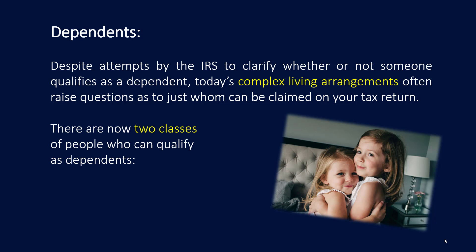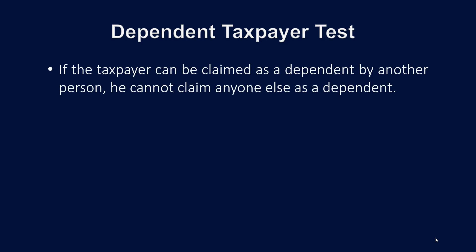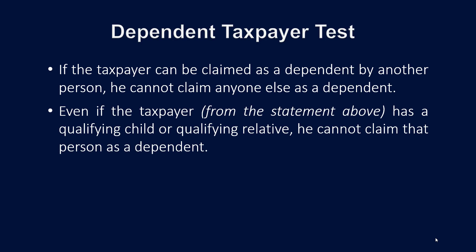There are now two classes of people who can qualify as dependents: qualifying children and qualifying relatives. Now let's go through some of the situations for dependent taxpayer tests. If the taxpayer can be claimed as a dependent by another person, then he or she cannot claim anyone else as a dependent. Even if the taxpayer has a qualifying child or qualifying relative, he or she cannot claim that person as a dependent.